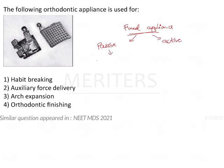Passive components are components which help to attach the appliance onto the teeth, like bands, brackets, or molar tubes and buccal tubes. They don't exert any force on their own; they only help to attach the appliance onto the teeth.